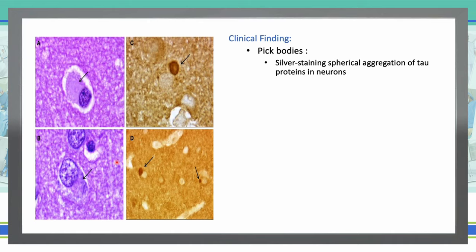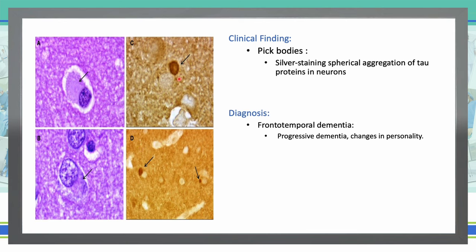Next, Pick bodies. These are silver-staining spherical aggregations of tau proteins in neurons — described as balloon-type shape. Pick bodies are found in the frontal cortex with tau proteins present. We will see that in frontotemporal dementia.